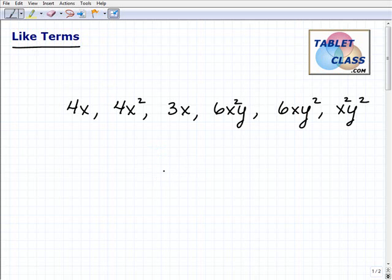All right, so what makes two terms like? Well, basically you have to have the exact, exact—we don't care about the number part. We only care about the variable part. You have to have the exact same variable part. So let me show you what I'm talking about. Okay, 4x and 3x are like terms because they have x to the first power.